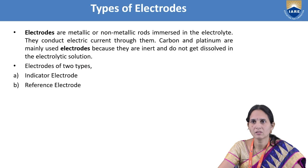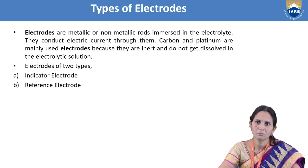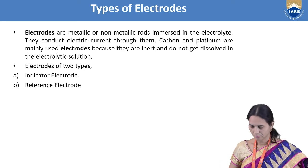Electrodes are metallic or non-metallic rods immersed in the electrolyte. They conduct electric current through them. Carbon and platinum are mainly used electrodes because they are inert and do not get dissolved in the electrolytic solution. The types of electrodes are: indicator electrode and reference electrode.